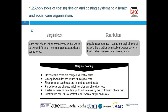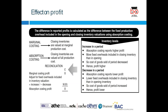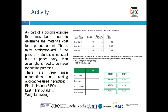Marginal costing treats all variable costs as the cost of the product, and fixed costs as period costs. Contribution = selling price minus variable cost per unit. For example: cost is £200, selling price is £500 — contribution is £300. Absorption costing includes all fixed and variable costs absorbed into the product, meaning closing inventory will typically have a higher value under absorption costing because fixed costs are also included in inventory valuation.